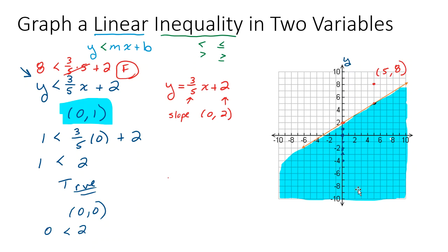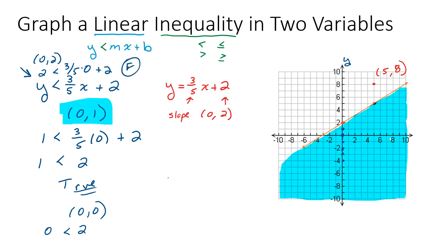The line itself is acting as a boundary — the points on the line are not solutions. Take the point (0, 2): if I put 2 in for y and 0 in for x, I get the statement 2 is less than 2. That's false; 2 is not less than 2, so it is not a solution. Since the line acts as a boundary, we signify that with a dotted line. So always graph this line first. If you have a strict less than or greater than, use a dotted line because you don't include points on the line. If your inequality is less than or equal to or greater than or equal to, use a solid line. Then you figure out your shading.